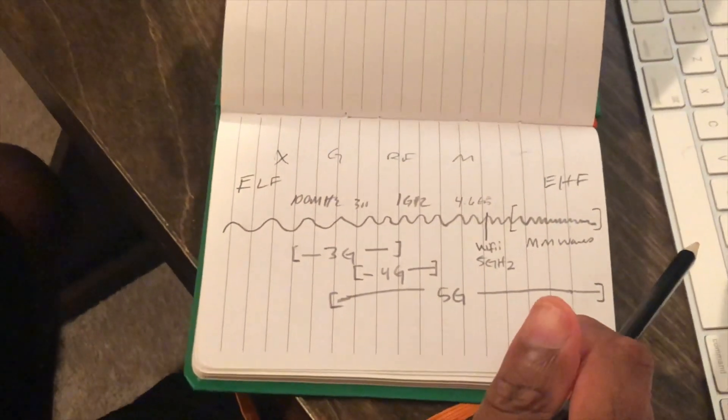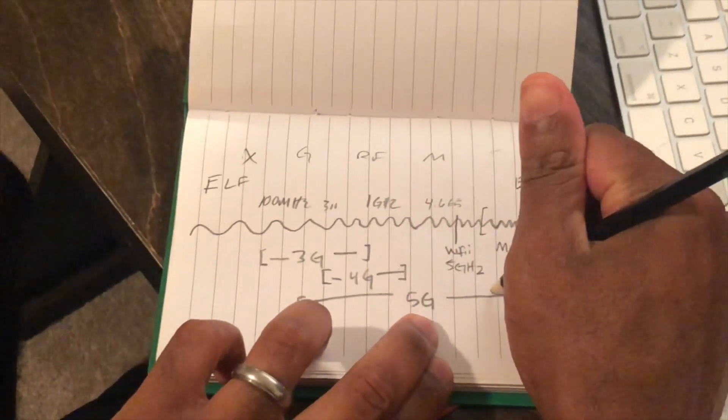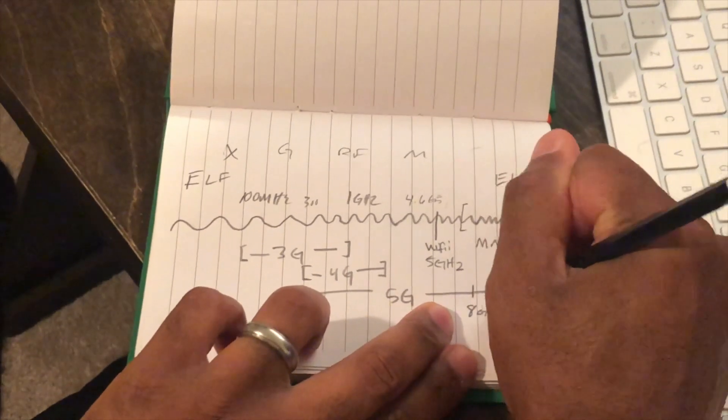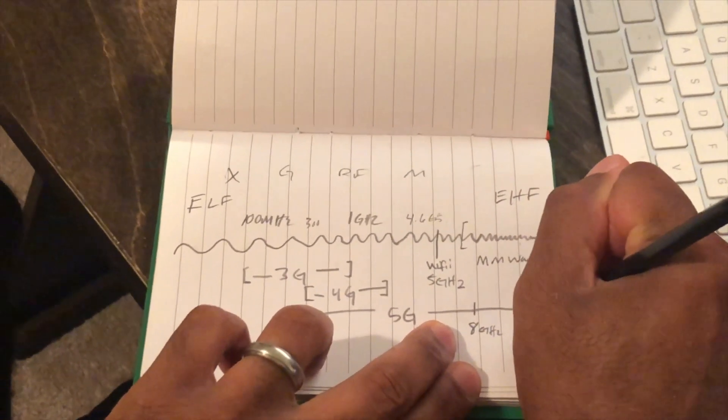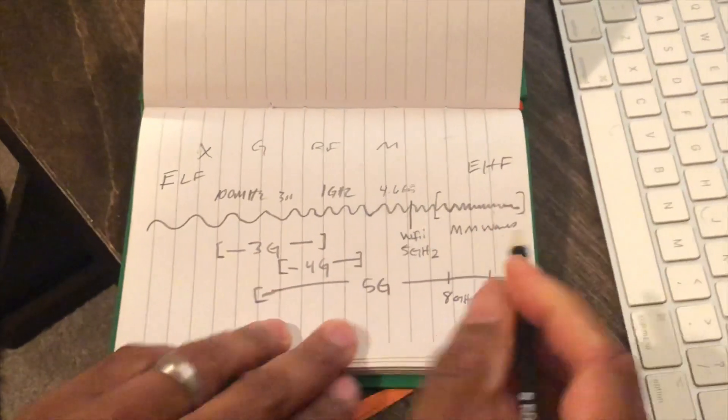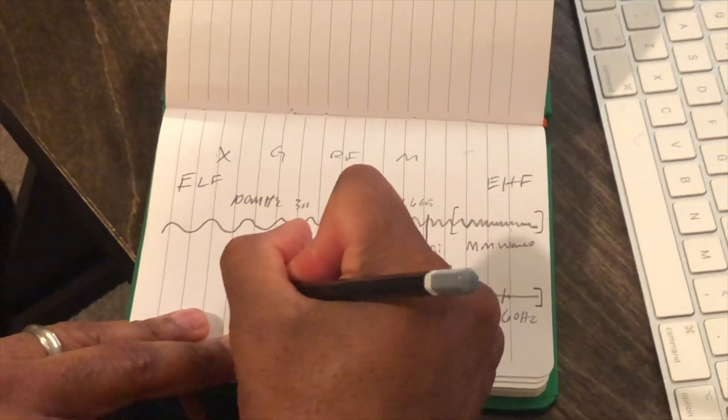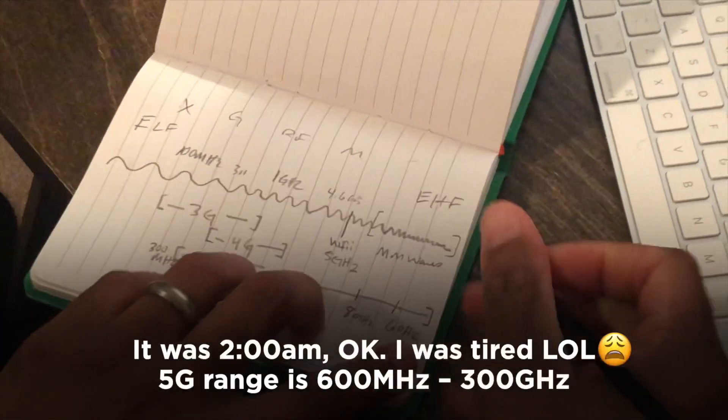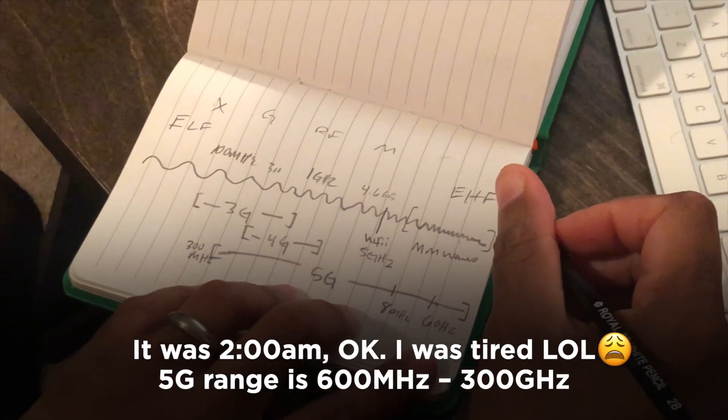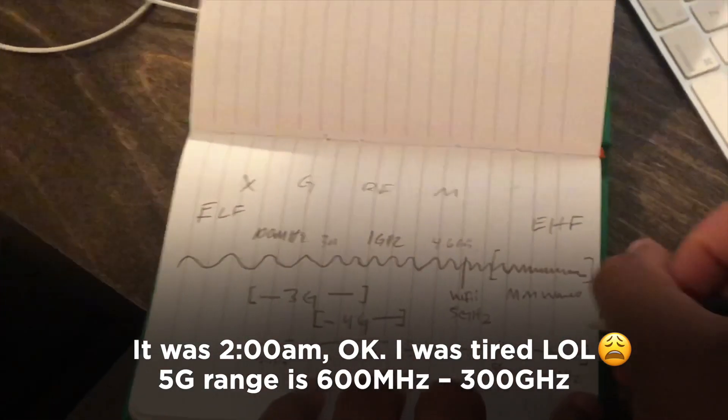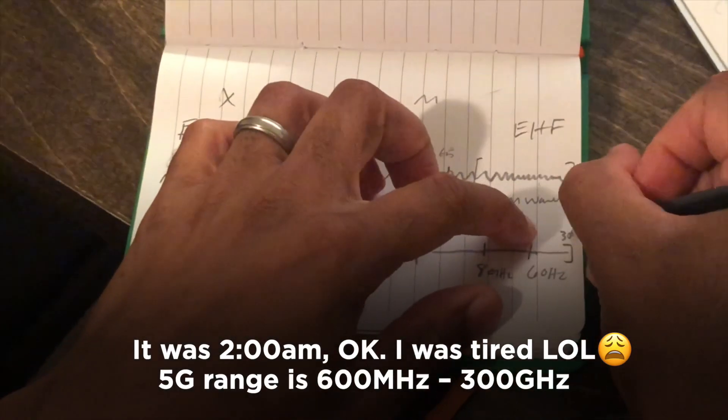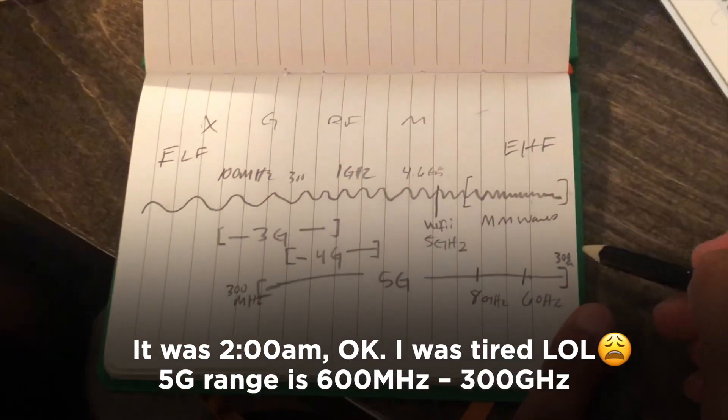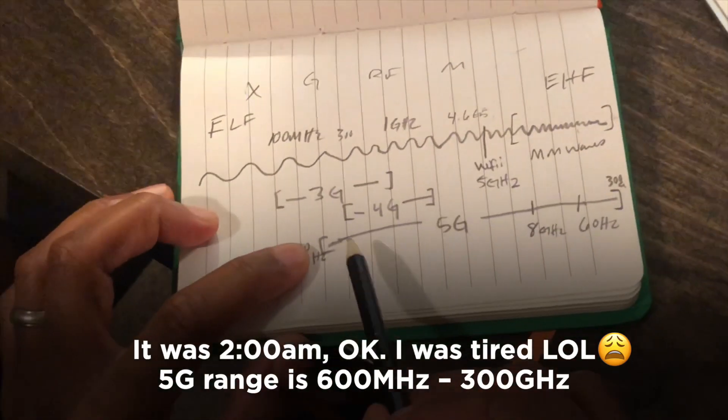5G presents an entirely new issue because of a few key frequencies somewhere higher up in this span: 8 gigahertz and 60 gigahertz. Keep in mind 5G goes from around 800 megahertz to 300 gigahertz, which is way at the very top.